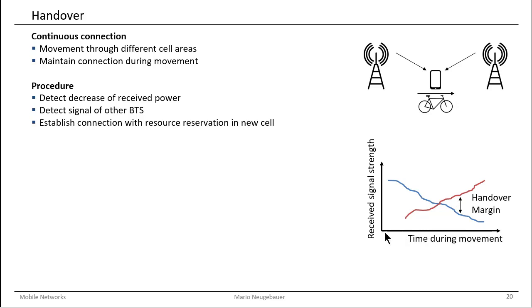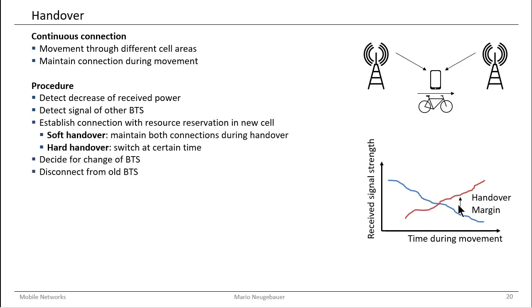This is shown over time during the movement — to the right is the time increase while you move from the left cell to the right cell. At a certain point in time, you register that there is a certain difference in signal strength, and this difference in signal strength would then initiate your handover. There are different methods of handover.